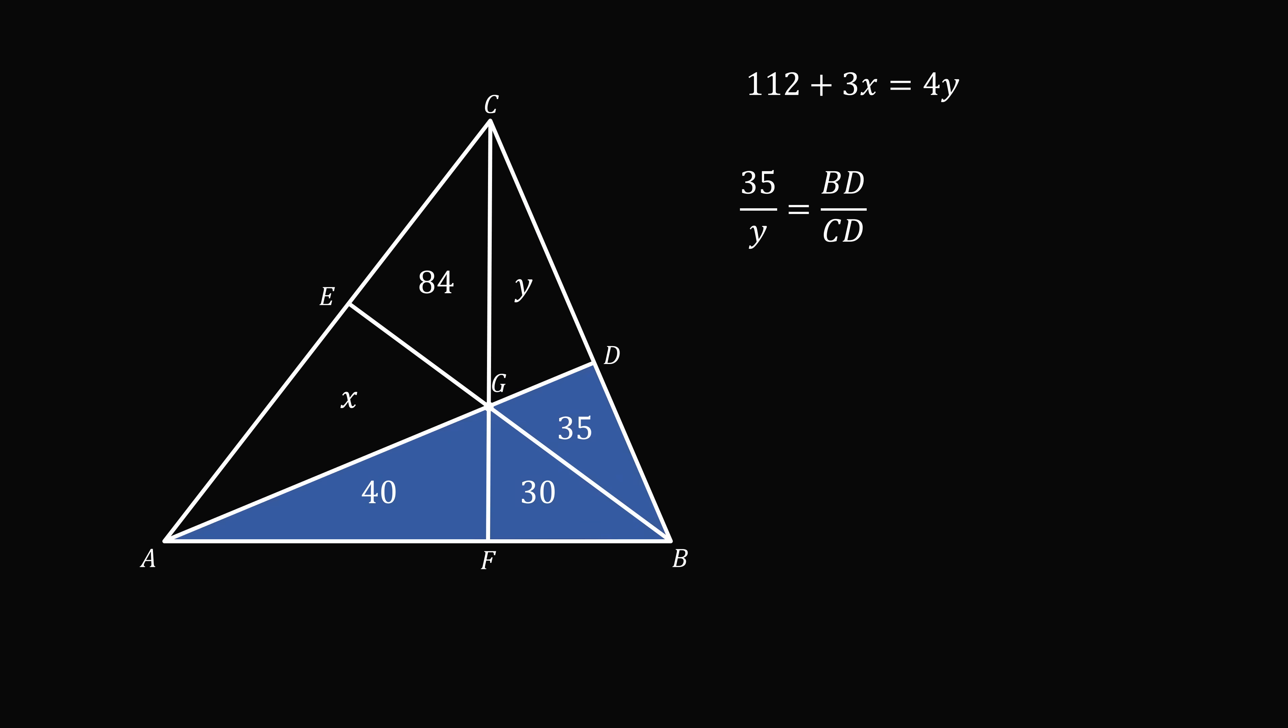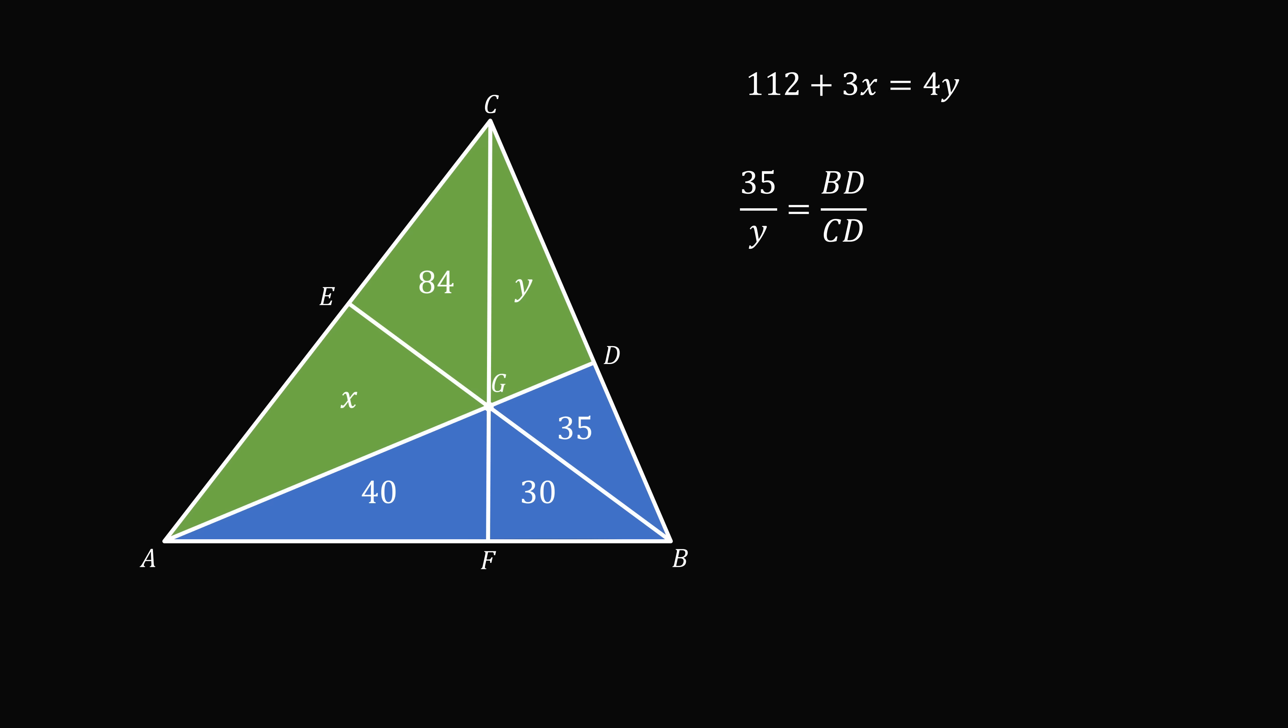Let's do the same thing for this triangle BDA and this triangle CDA. The ratio of the areas of these two triangles will be equal to the ratio of the bases. So we have 105, which is equal to 40 plus 30 plus 35. This is divided by the area 84 plus x plus y. And that's equal to the same ratio BD divided by CD.